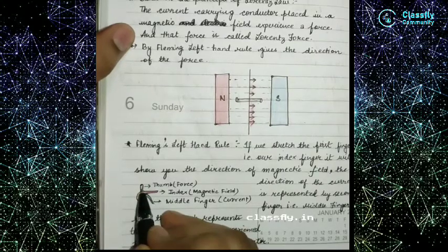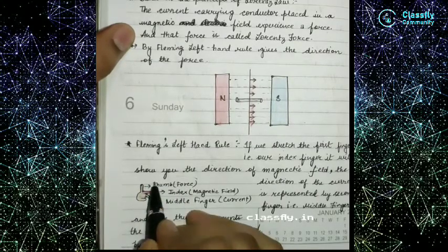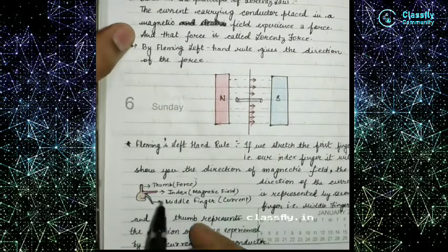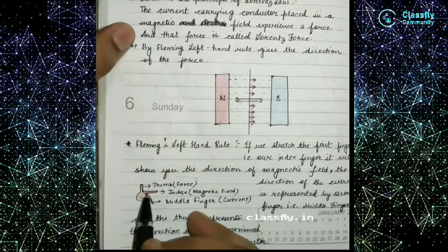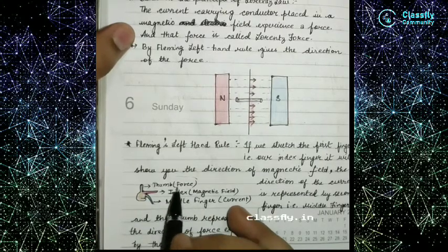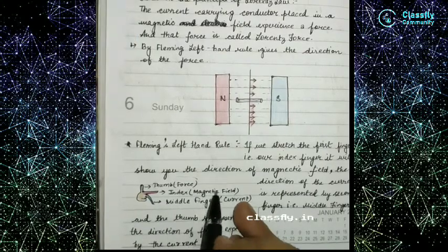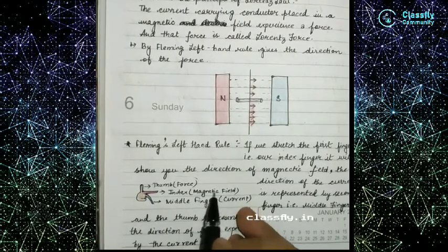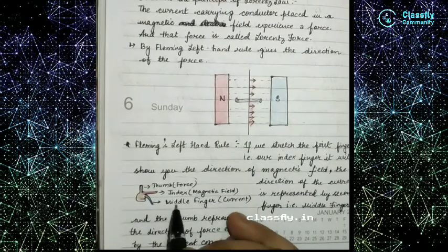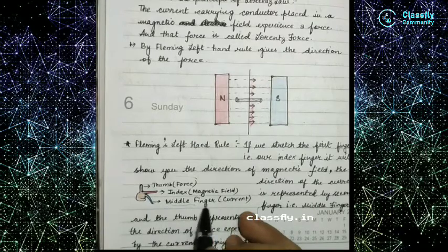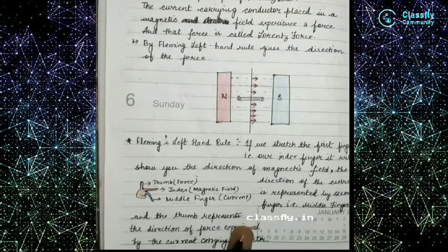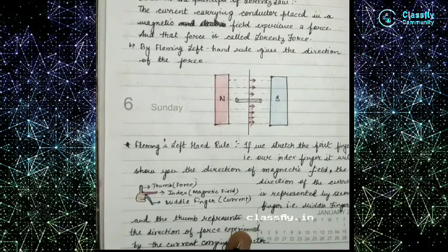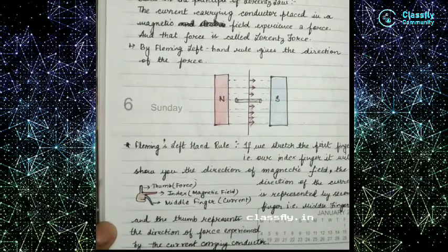I have also drawn a small diagram to make this clear. The thumb represents force, the red index finger represents the magnetic field, and the middle finger represents the direction of the current.